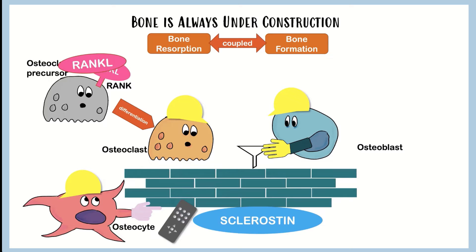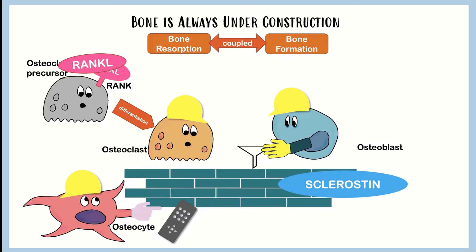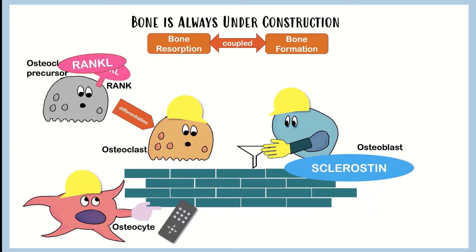Or they can produce something known as sclerostin. Sclerostin goes to osteoblasts and inhibits their function, so sclerostin inhibits bone formation. So the osteocyte can really orchestrate bone however it wants - it can change the amount of resorption and change the amount of formation. That's what the osteocyte is doing.